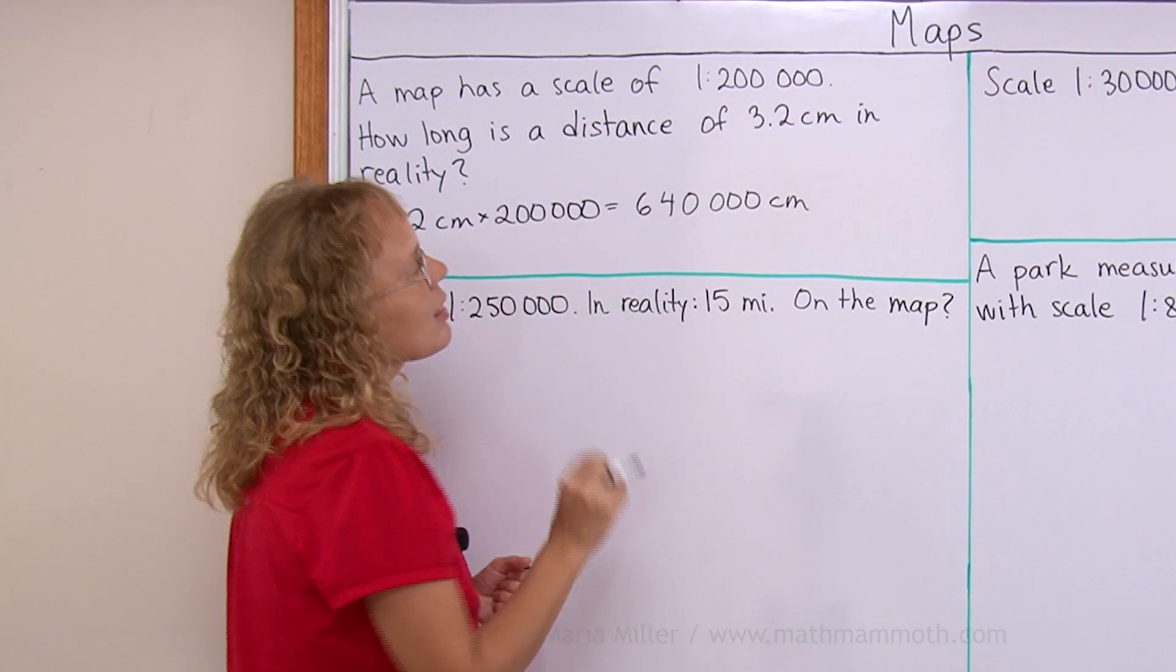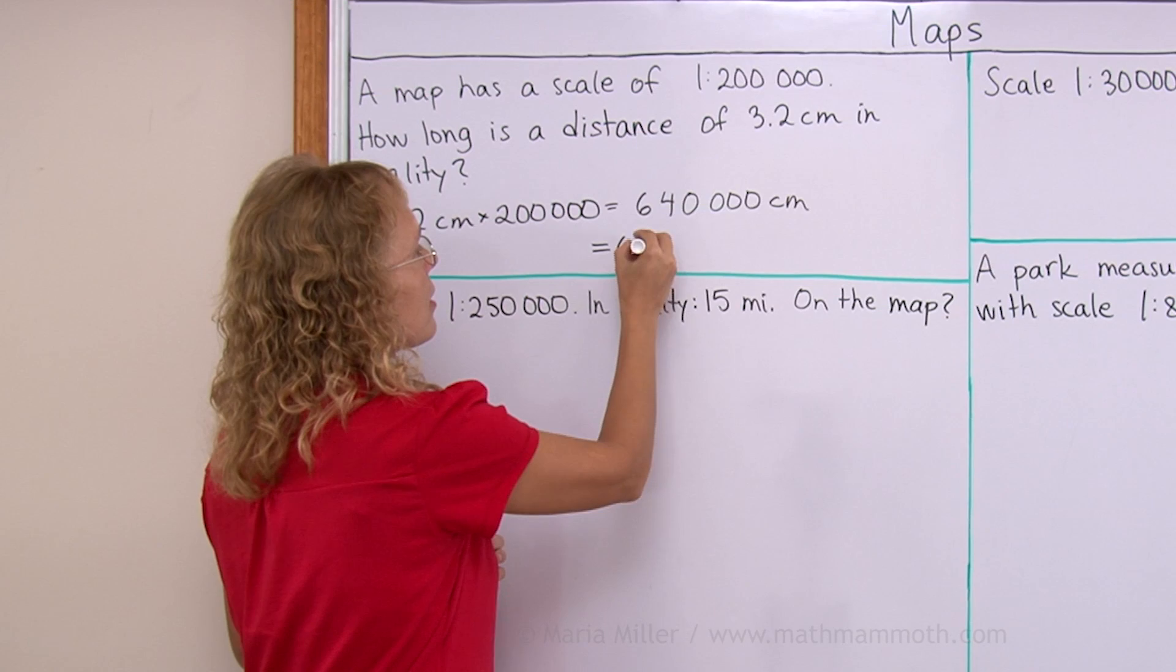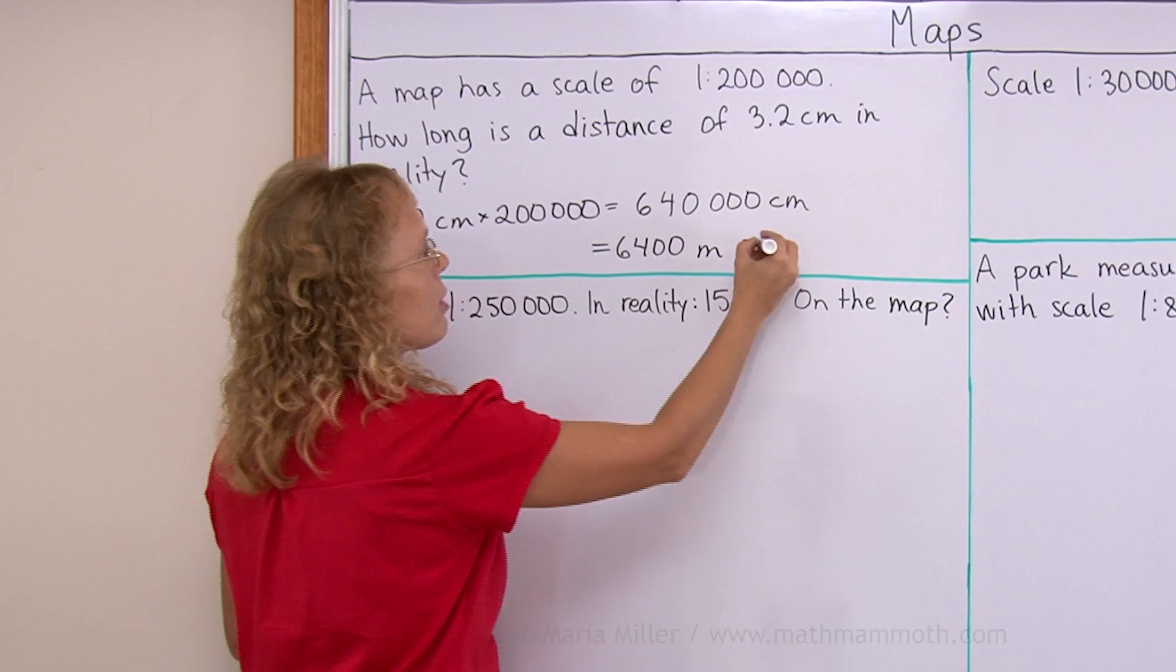But of course you don't want to give that distance in centimeters, you want to convert that. And let's first change it into meters, remembering that 100 centimeters makes a meter. So I drop two zeros, I divide by 100 and I get this many meters. And now into kilometers we get 6.4 kilometers.